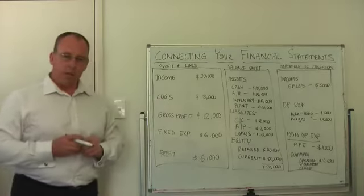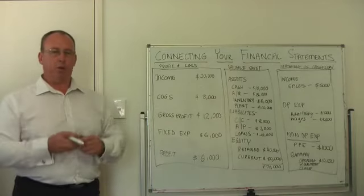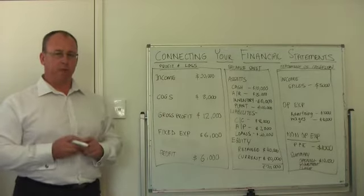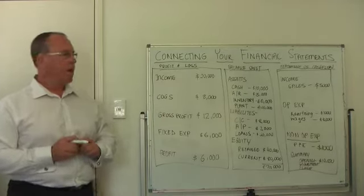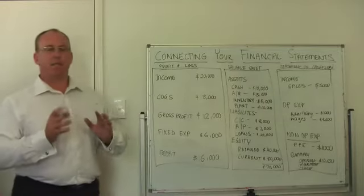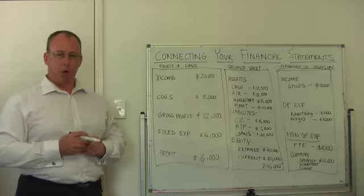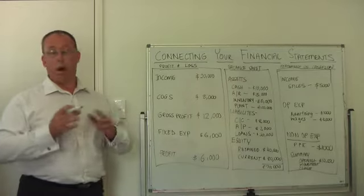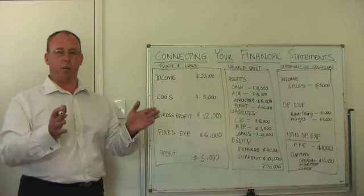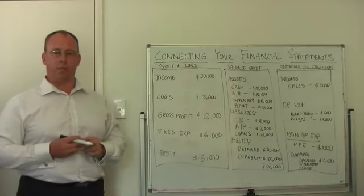Secondly is our balance sheet. Our balance sheet is a snapshot of right now — the health of our business. How are we sitting with regard to the different elements of our business right now? And finally, the statement of cash flow is a summary of how the money flowed in a given period of time. If you're using accounting software you can generally set windows to see how the cash flowed in that particular period.